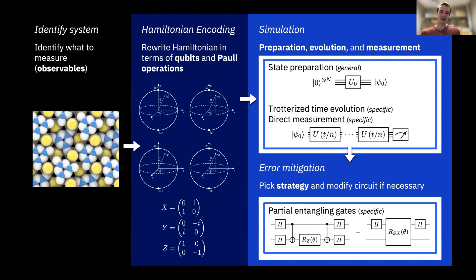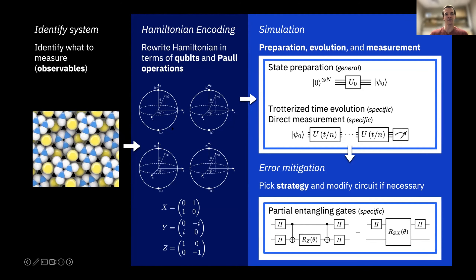For the rest of my talk, I'm going to choose a specific example — a toy model — that will let the quantum computing techniques shine through across these different steps. I'm going to go fast through the first two sections and then slow down for the time evolution and error mitigation portion.